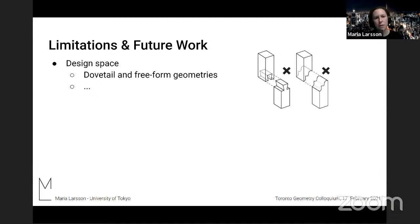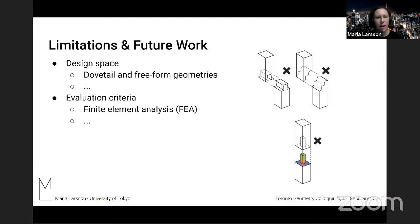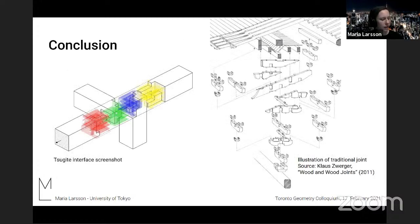And as for limitations and future work, there is further potential to increase the design space. For example, we cannot make this popular dovetail joint or some more freeform shapes in the current implementation. And there is also possibility to add even more evaluation criteria. For example, to do finite element analysis for more detailed structural analysis of the joint. The challenge is that the calculation time might be long. But if it can calculate that quickly, that would be very useful.